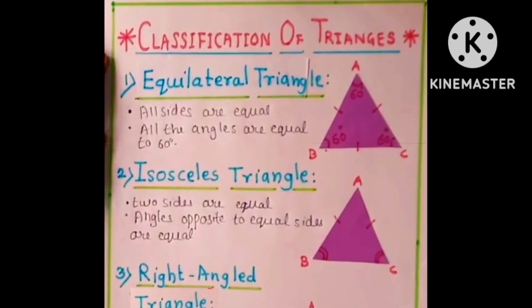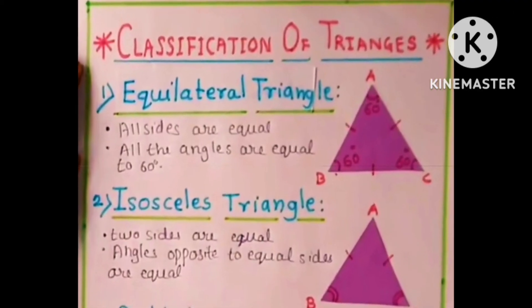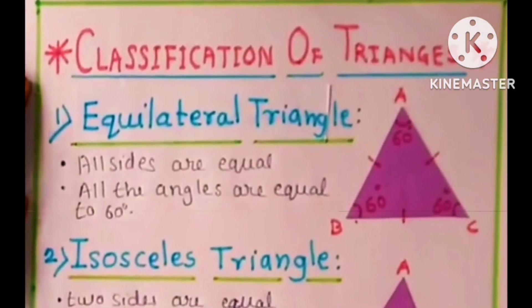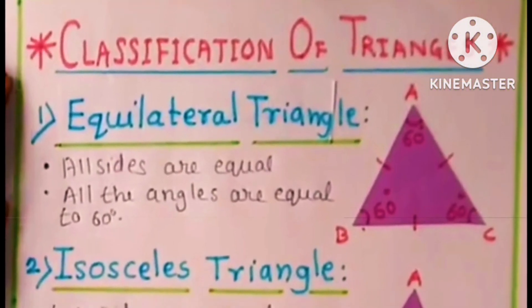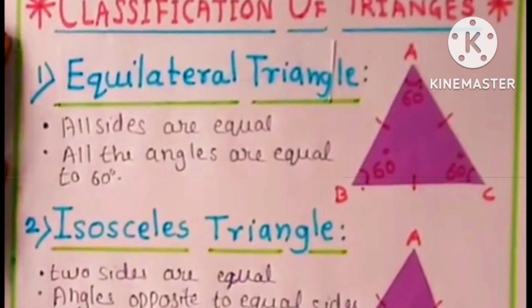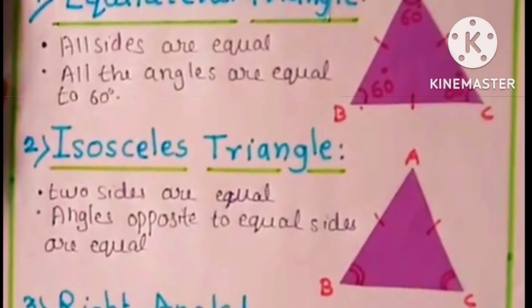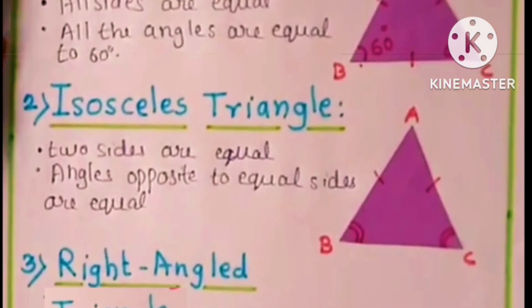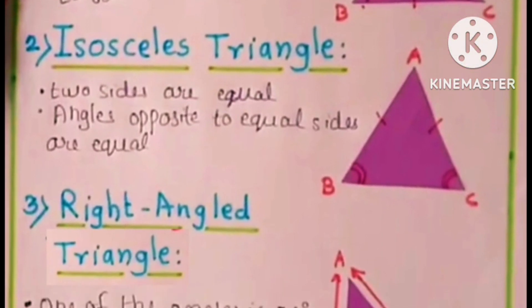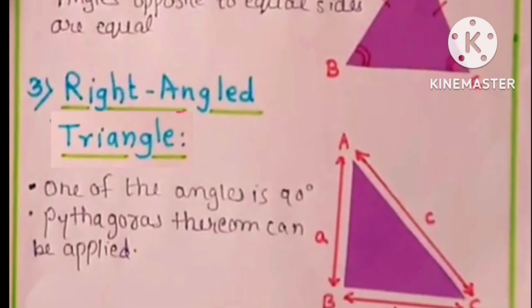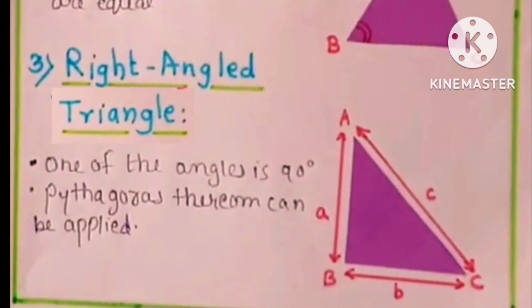The next page is classification of triangles: the first one is equilateral triangle, the second one is isosceles triangle, and the third one is right angled triangle.